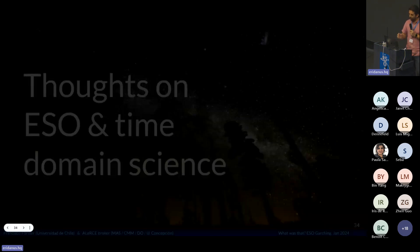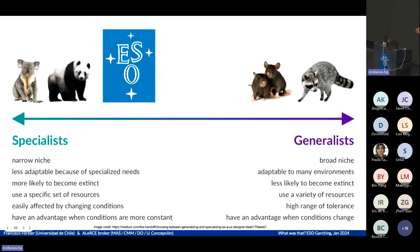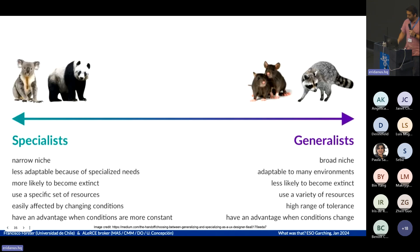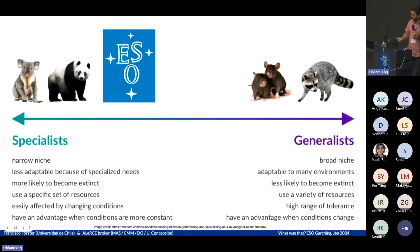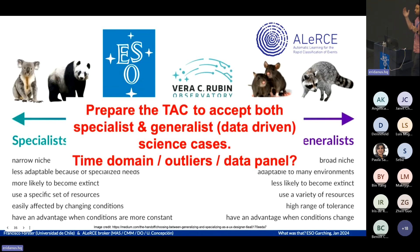For my final slide, since we were asked to provide some feedback: think about the specialist versus the generalist. Specialists occupy narrow niches and have an advantage when things are stable. Generalists occupy broader niches and have an advantage when things change. I think we are in changing times. IESO is more like a specialist and Rubin is more like a generalist. ALERCE is like the generalist of generalists. What I think we need is an approach that can accommodate both worlds — specialist and generalist — which is related to the hypothesis-driven versus data-driven way of doing science.